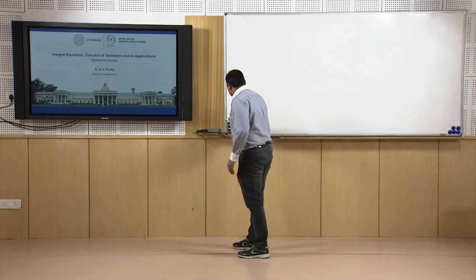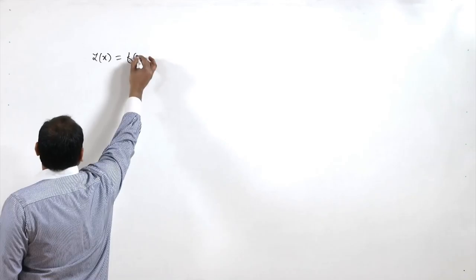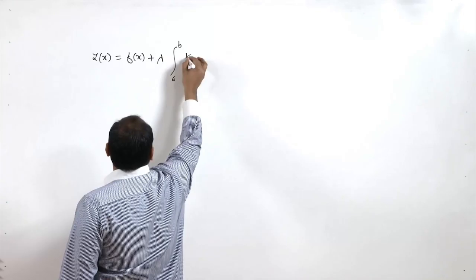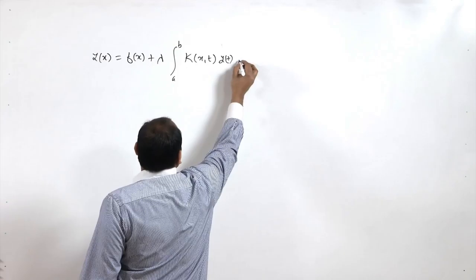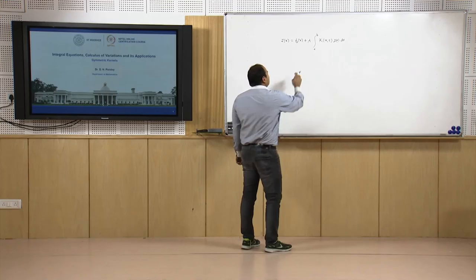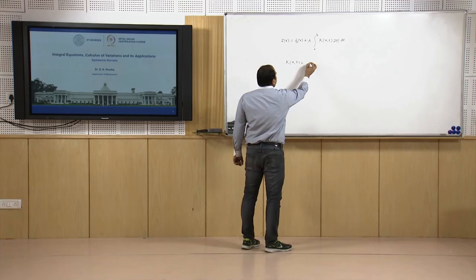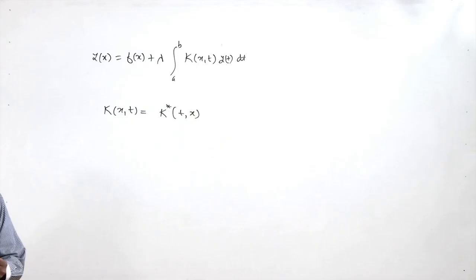Today we will discuss this kind of problem: y(x) = f(x) + λ ∫[a to b] k(x,t) y(t) dt. This is the Fredholm integral equation of second kind. If we assume that k(x,t) = k*(t,x), then we call this kernel a symmetric kernel.